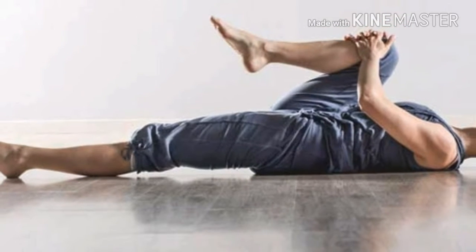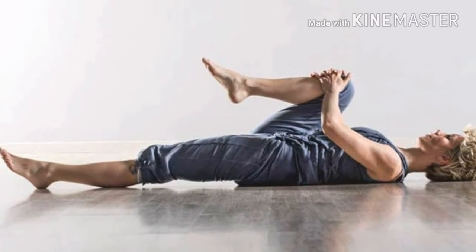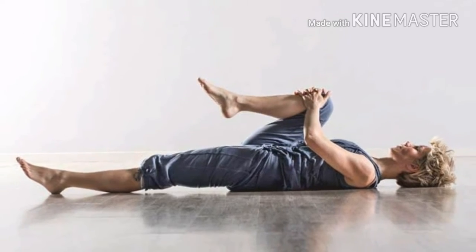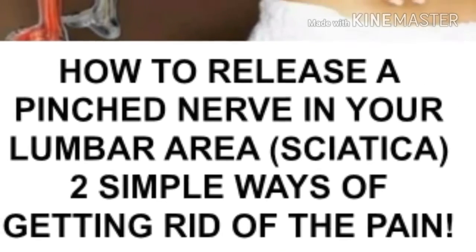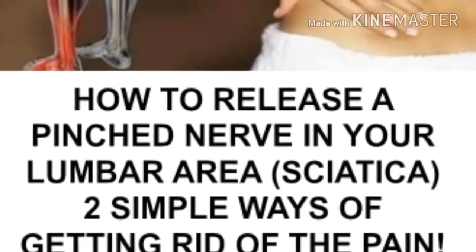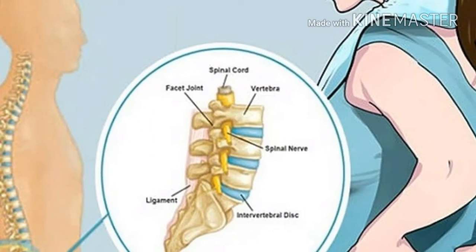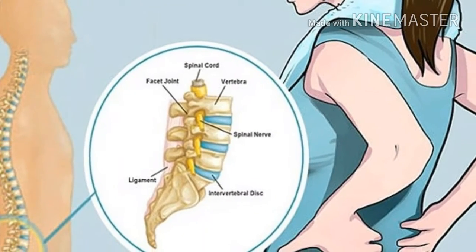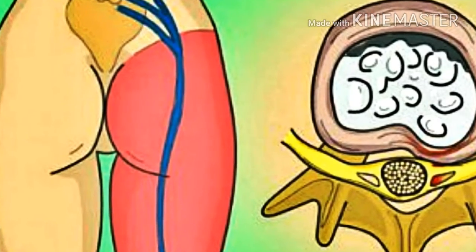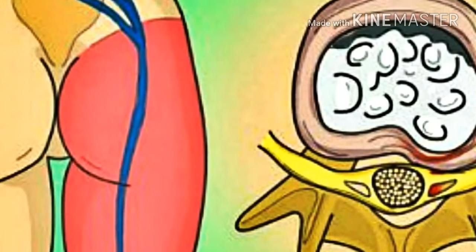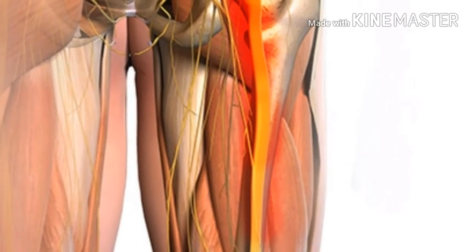The most common sciatica symptoms include sharp, painful burning sensations or cramping. Sometimes there can be tingling sensations and numbness in different areas of the buttock, leg, or foot. Usually sciatica occurs on one side only, not in both legs simultaneously.